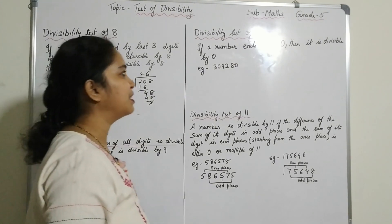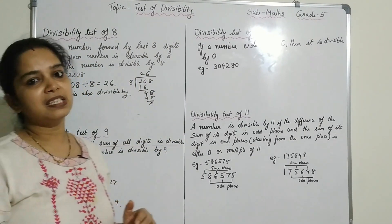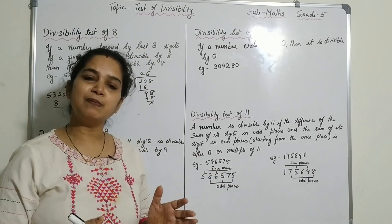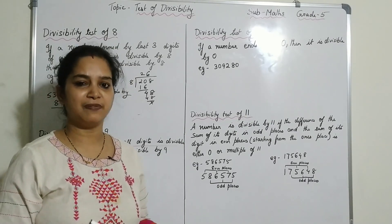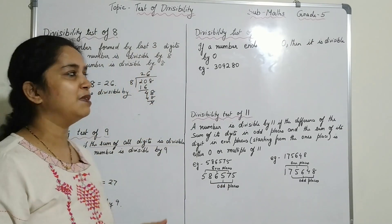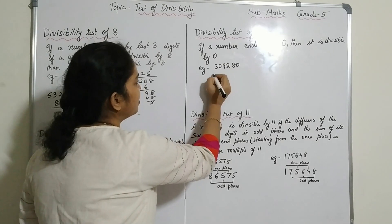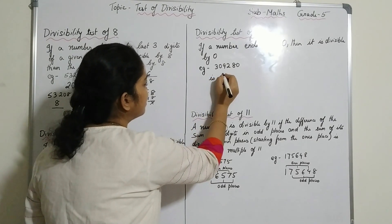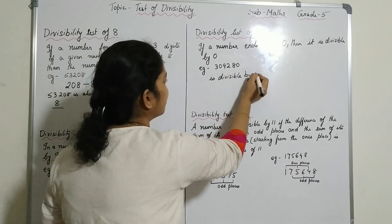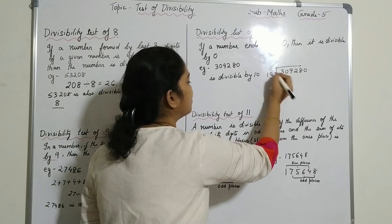Now, divisibility test of 10. How do we find if a number is divisible by 10? If a number ends with 0, then it is divisible by 10. Compare this with 5 — for 5, a number ending in 0 or 5 is divisible, but for 10, the number must end with 0 only. So 309280 is divisible by 10.